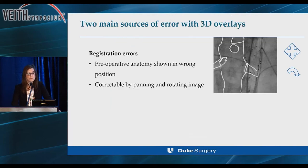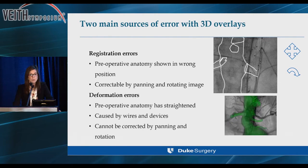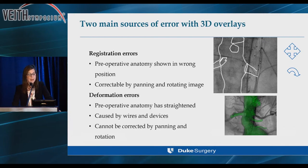There are two main sources of error with 3D overlays. The first is registration errors, where the preoperative anatomy is shown in the wrong position — fairly simple to correct by panning and rotating the image. But the more challenging type is deformation error, where the preoperative anatomy has straightened. It's relatively predictable, caused by wires and devices introduced into the aorta, and this can't be corrected by panning and rotation.